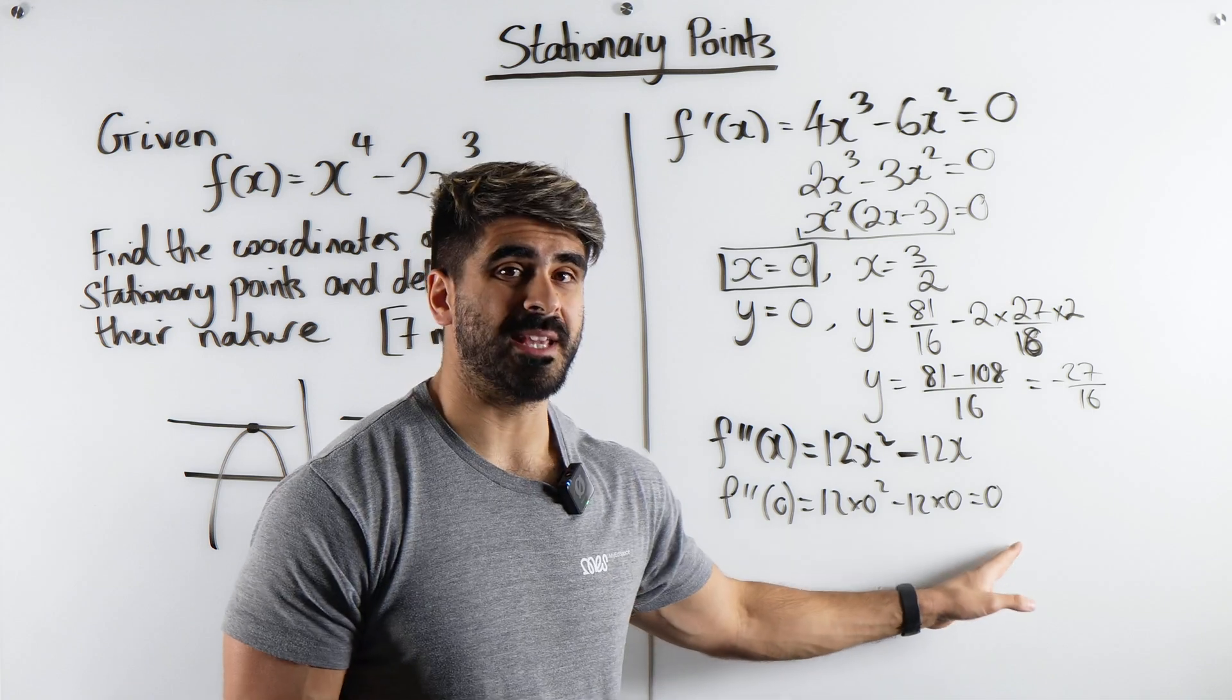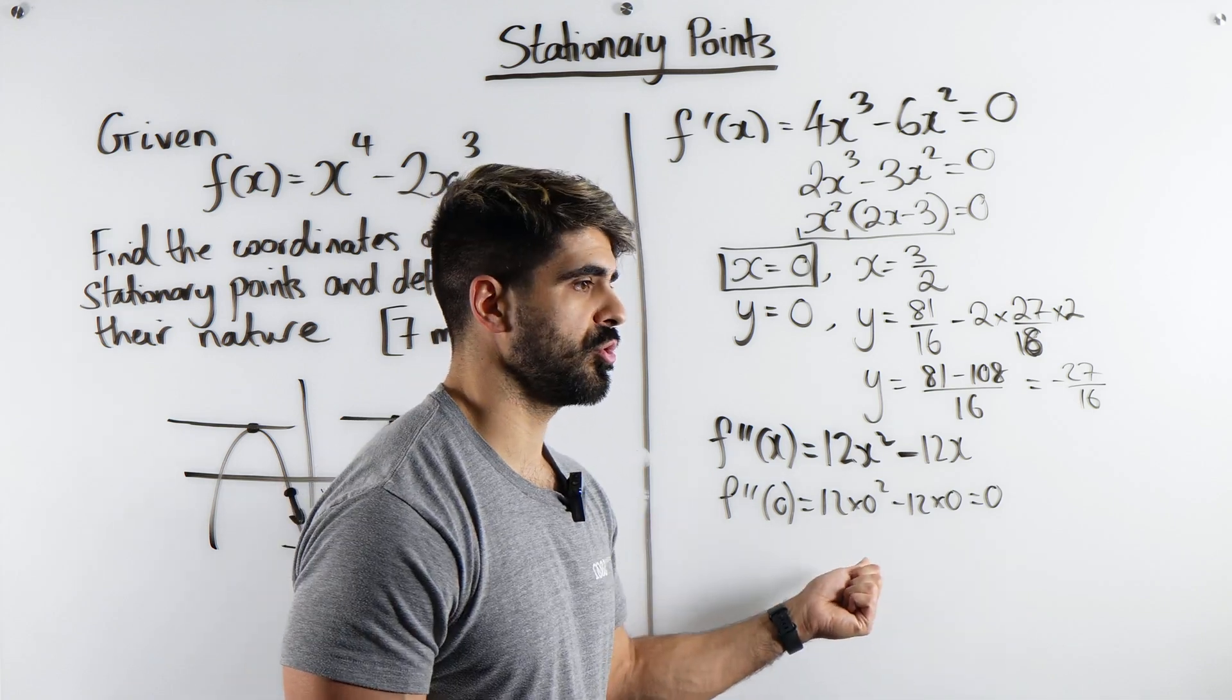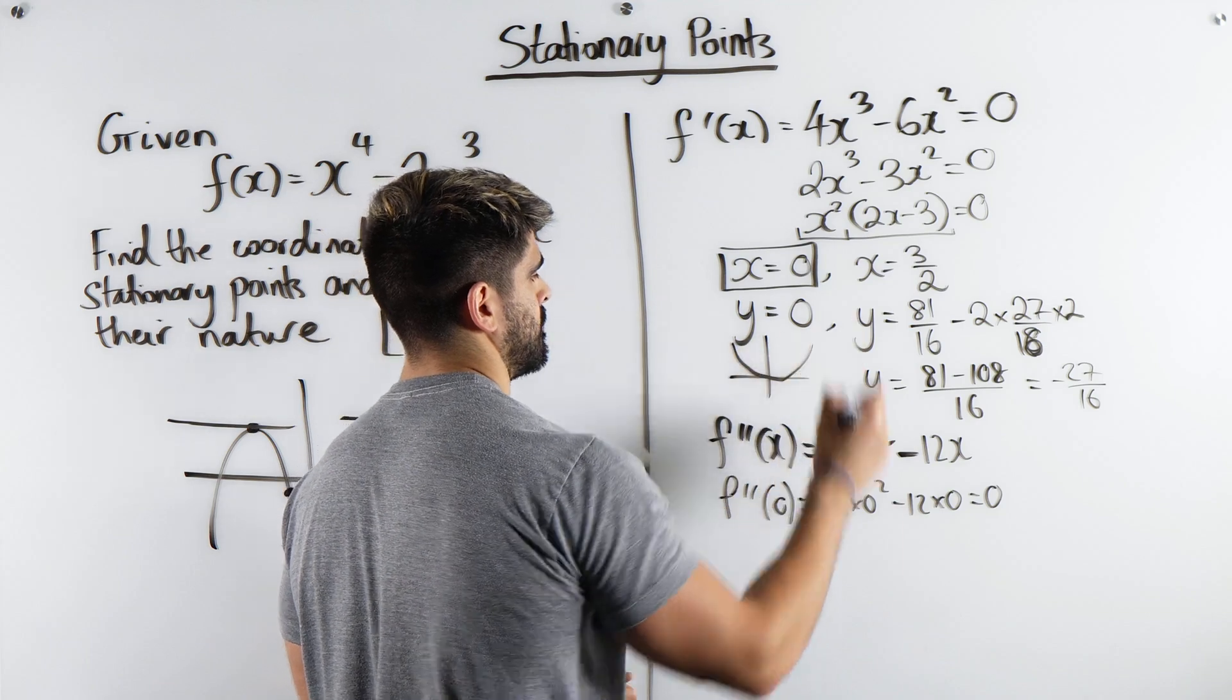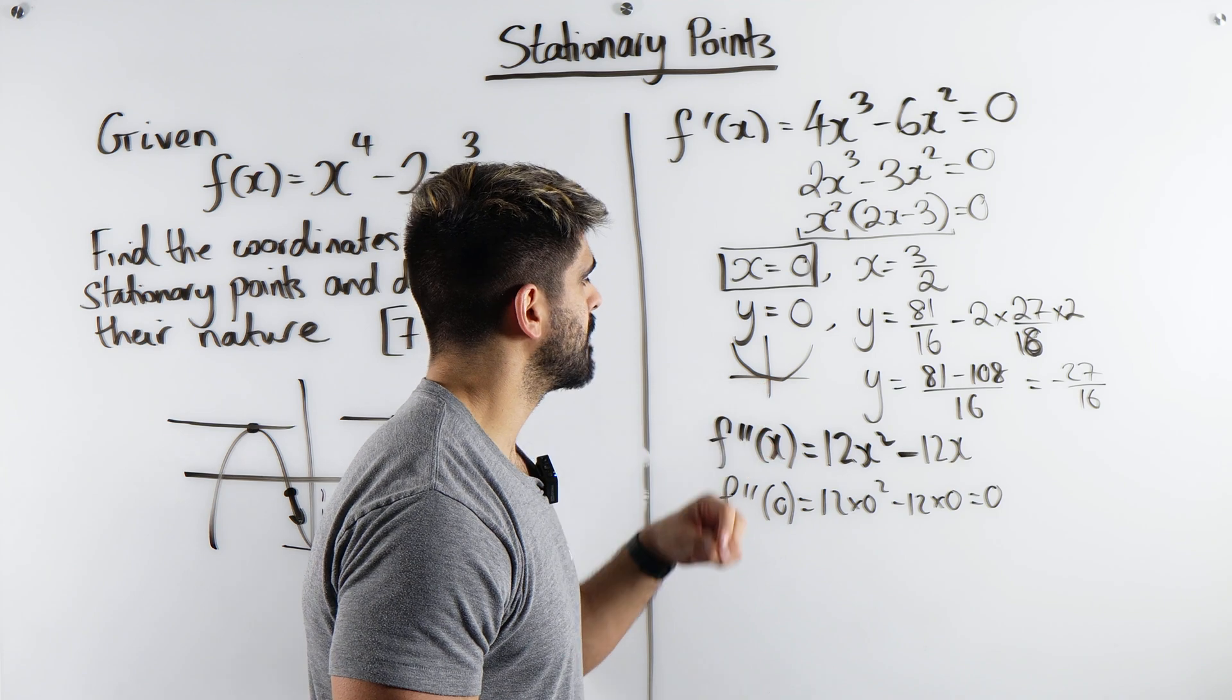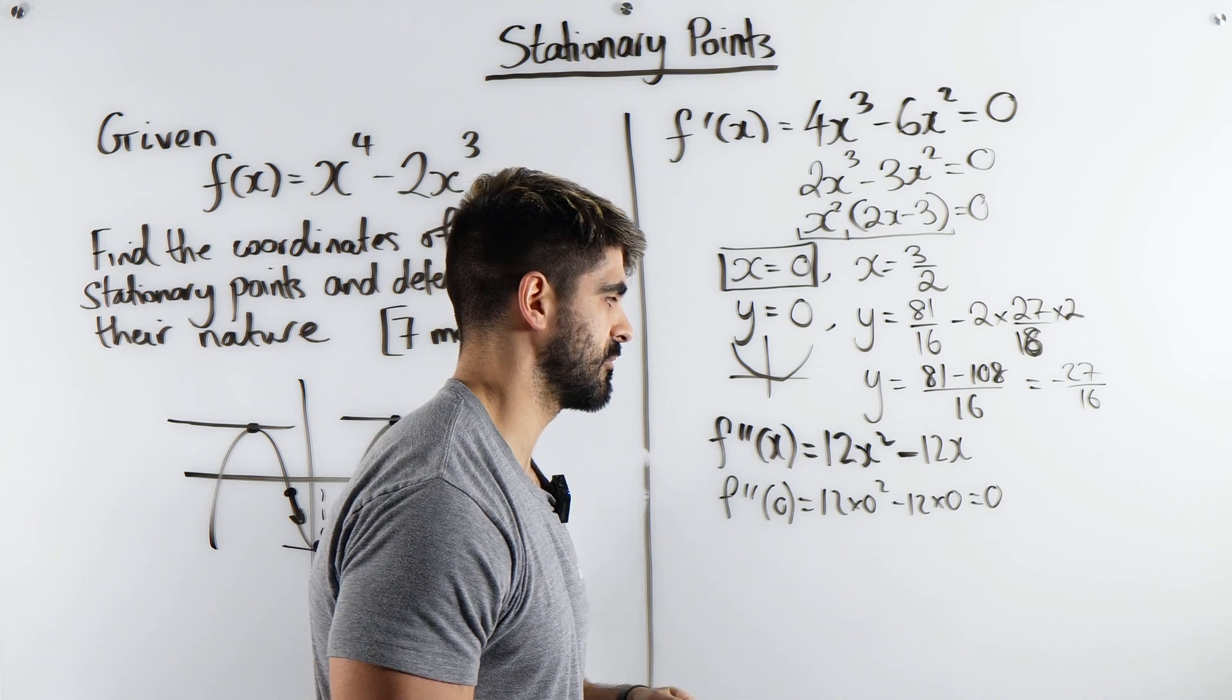In fact, it could be anything. And if you want to check that really quickly, do y equals x to the power 4. x to the power 4 looks like this. A bit like a quadratic. I've drawn that really badly, but its turning point there is clearly a minimum point, but its second derivative at that turning point would be 0.